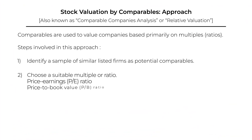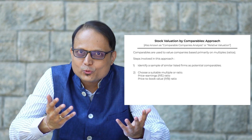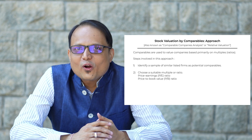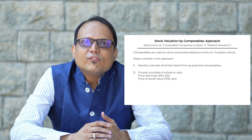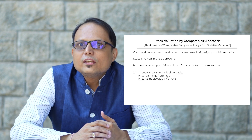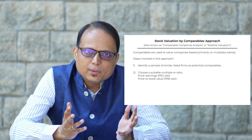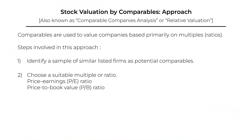The next step involved in this approach is to choose a suitable multiple or ratio. That multiple could be the price-to-earnings ratio, price-to-book ratio, or some other ratio. In the example I am going to talk about, we are going to illustrate using price-to-earnings ratio as our multiple.